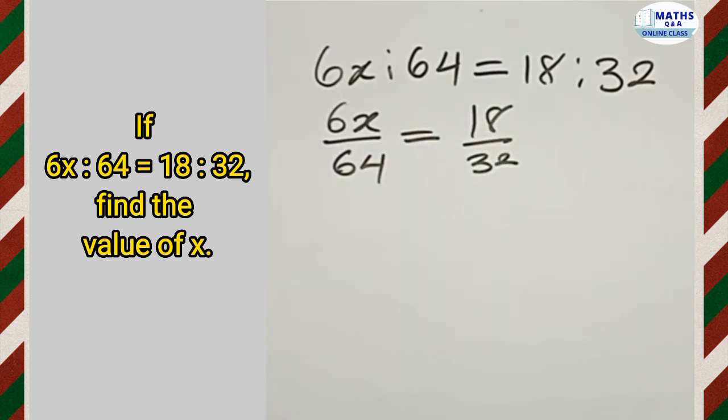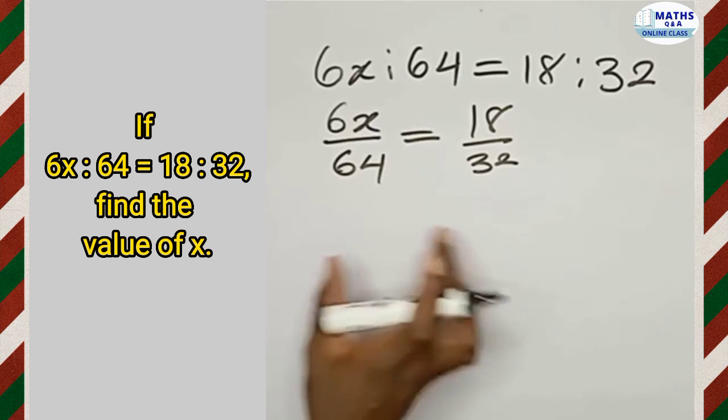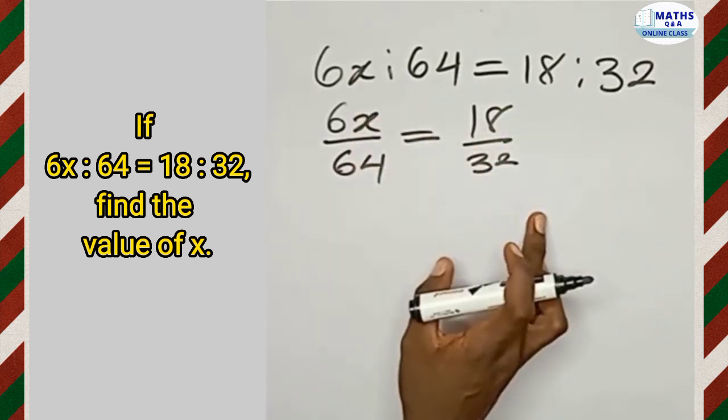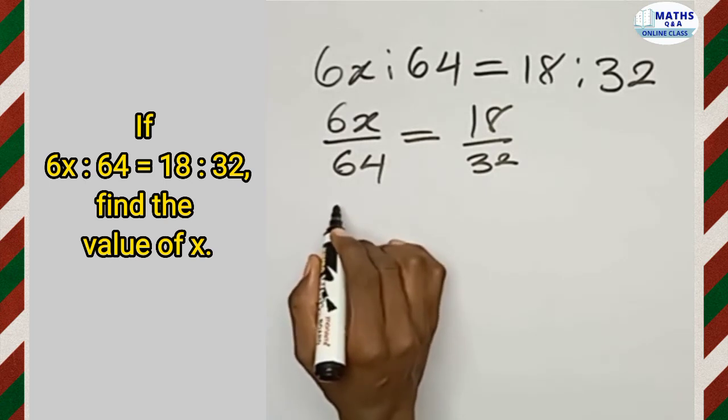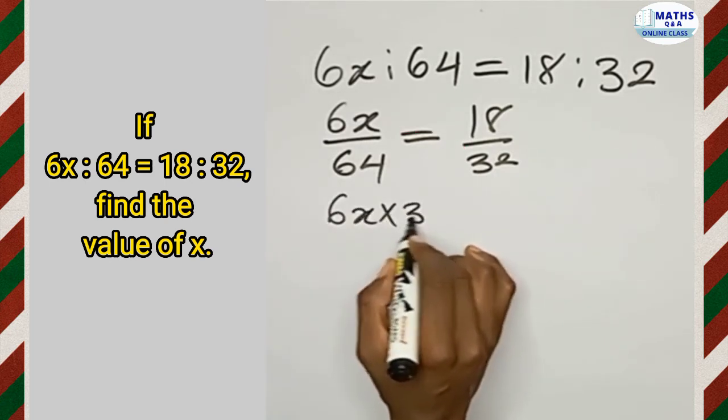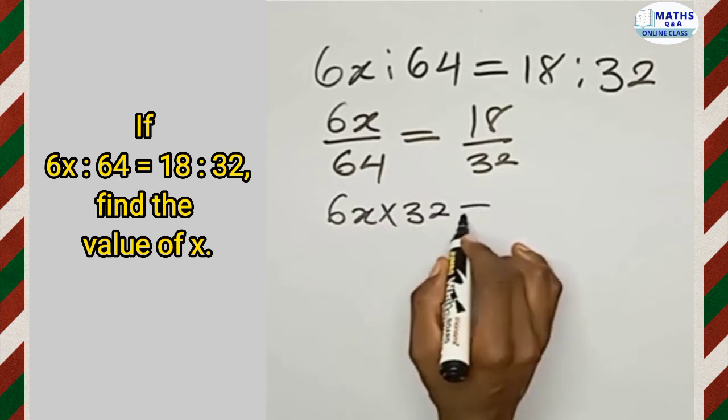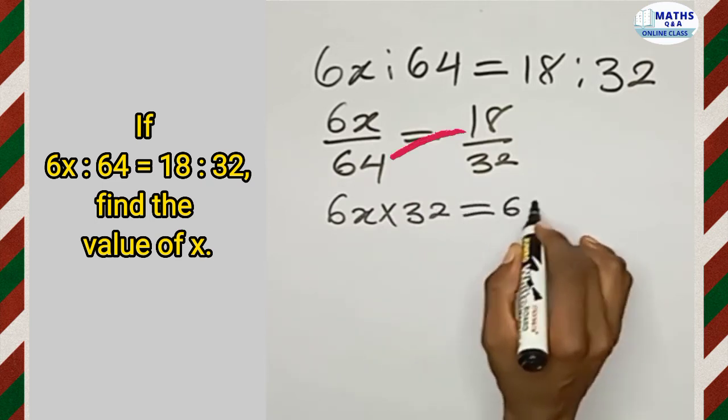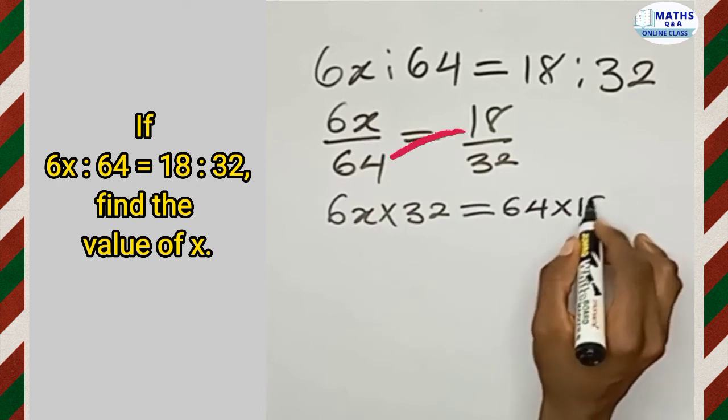Now at this point we can cross multiply, and that is going to give us 6x multiplied by 32, which is equal to 64 multiplied by 18.